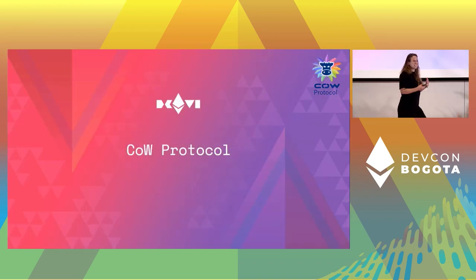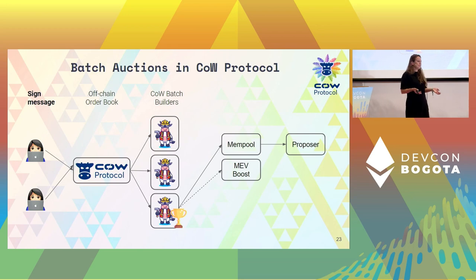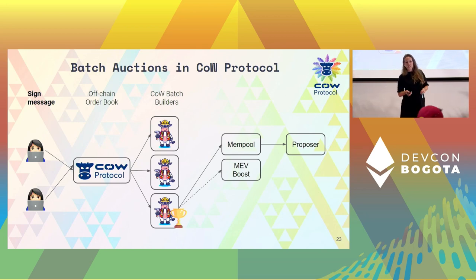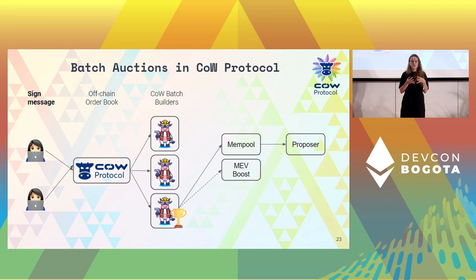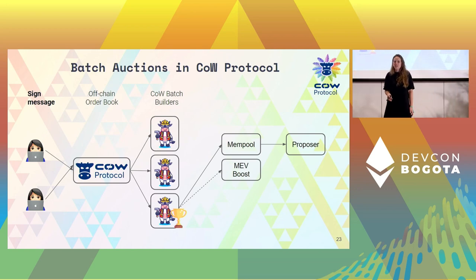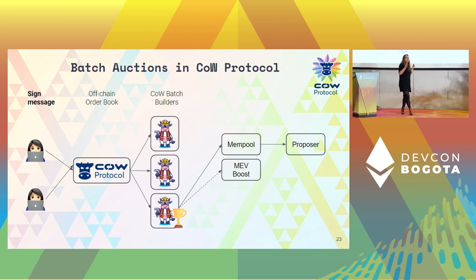This leads us to Cow Protocol, an implementation of batch auctions on Ethereum today. We do batch auctions by batching trades together. Users on CowSwap go to the UI and sign messages — they sign an intent to trade, not a transaction on Ethereum. This gives us more flexibility: we collect all these orders in our off-chain order book, then run a competition of so-called cow batch builders who look at the orders in the off-chain order book and try to find the best possible way of matching them together.